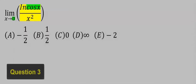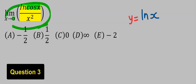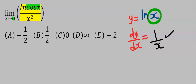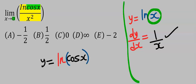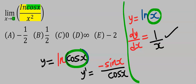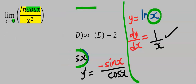Next, let's consider this question. To solve this problem, remember how to differentiate ln: you first differentiate what is inside, then recopy the original expression to the denominator. For example, if we have ln(cos x), then y′ equals the derivative of cos x — which is minus sin x — over cos x.